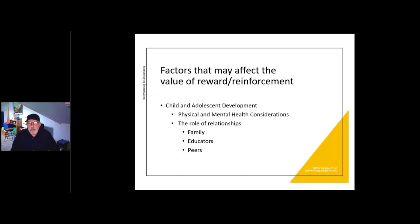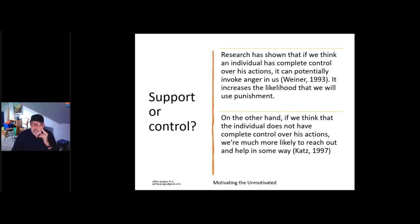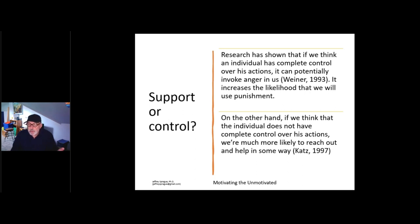Research has shown that if we think an individual has complete control over his actions, it can potentially invoke anger in us and increases the likelihood that we'll use punishment. So if I believe my child could do better, could work harder, could work for less rewards, and we think they've got control over it, we're probably just going to get mad at them. On the other hand, if we think the individual may not have as much control over his actions — such as their response to motivation — we're much more likely to reach out and help. This slide really suggests that we give the child the benefit of the doubt and try to understand why things are working from their point of view, not our point of view. You're going to win in the end if you try to meet the child where they are.